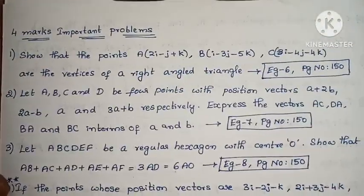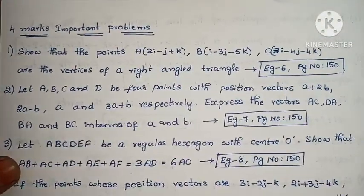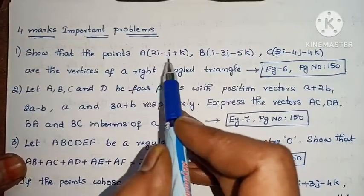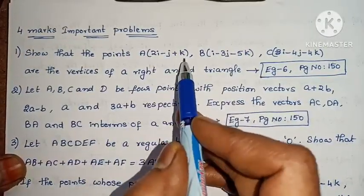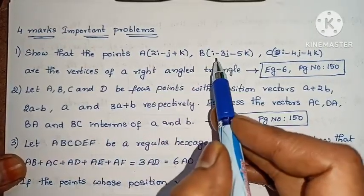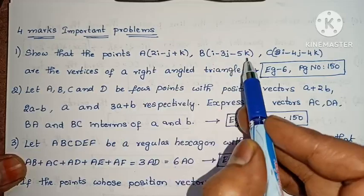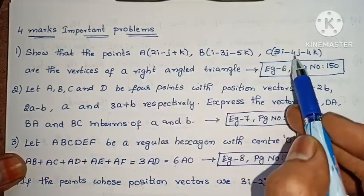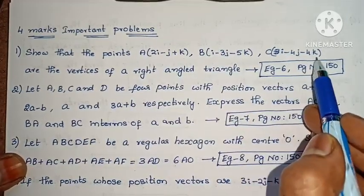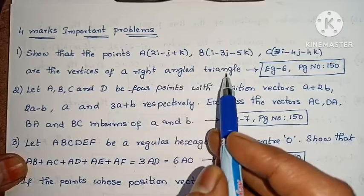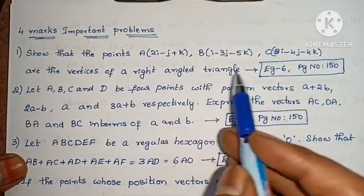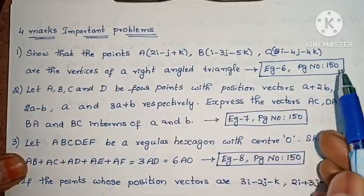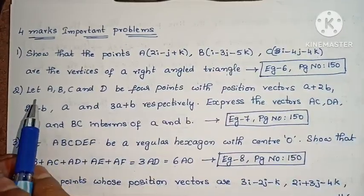Next: 4-mark important problems. First one: Show that the points A = 2i minus j + k, B = i minus 3j minus 5k, C = 3i minus 4j minus 4k are the vertices of a right-angled triangle. Example 6, page number 150.